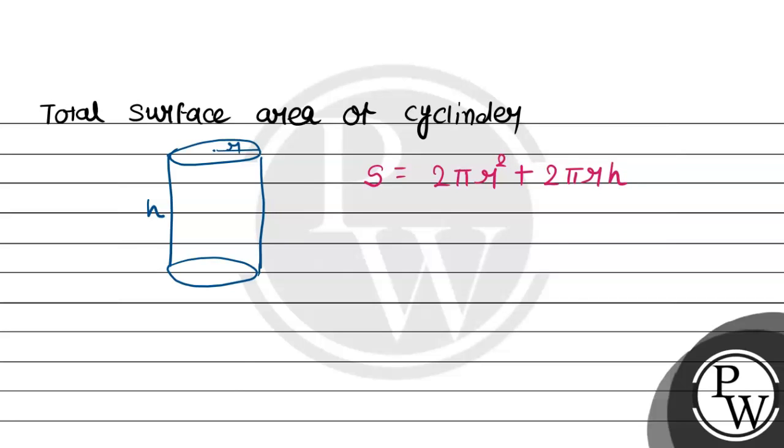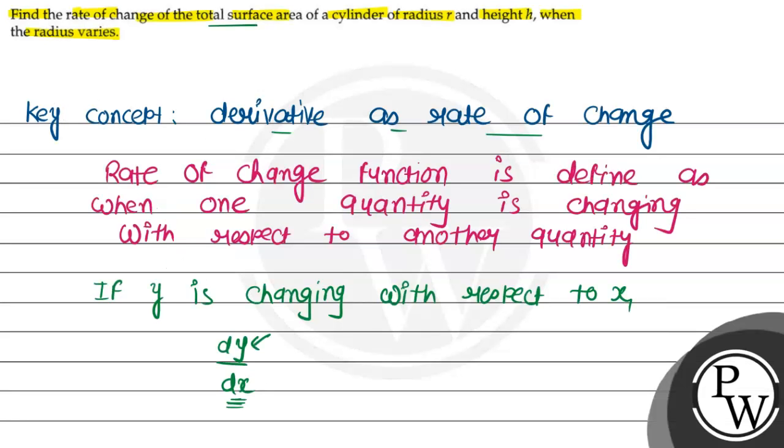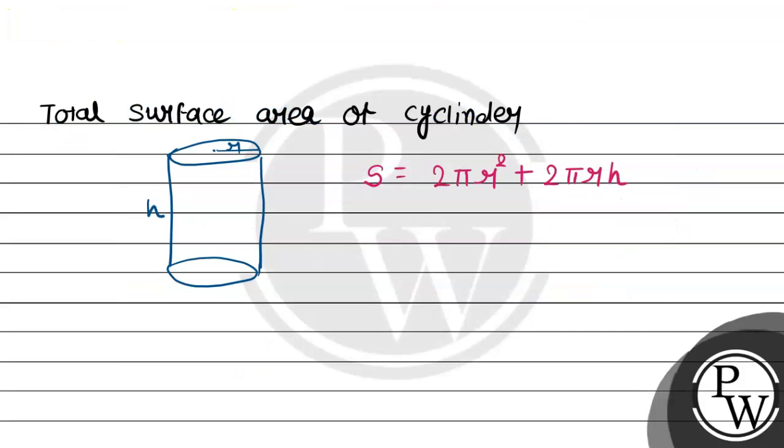Now, the question asks us to find the rate of change of total surface area. That means dS/dr.